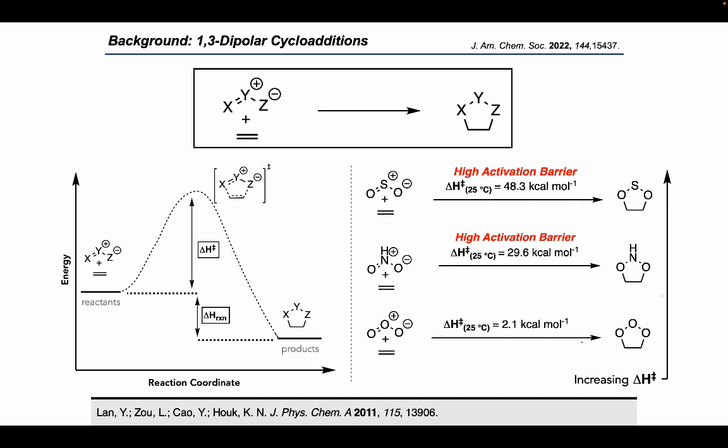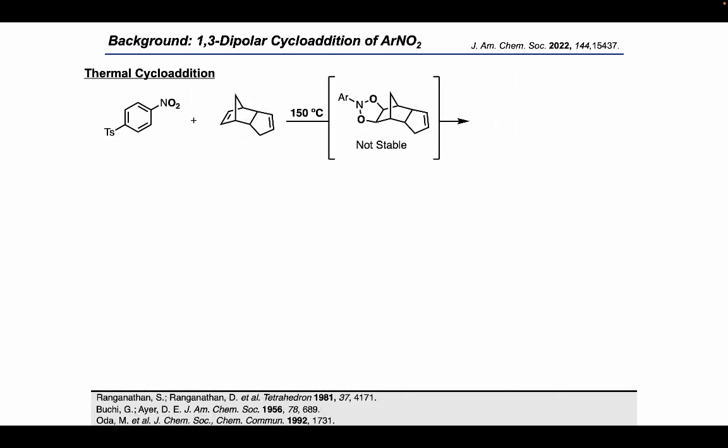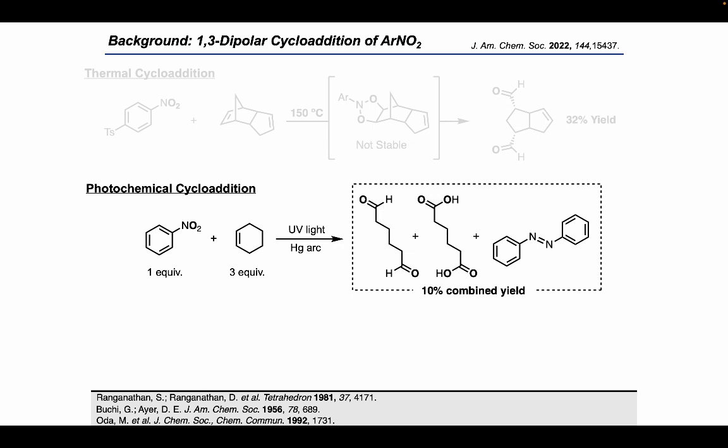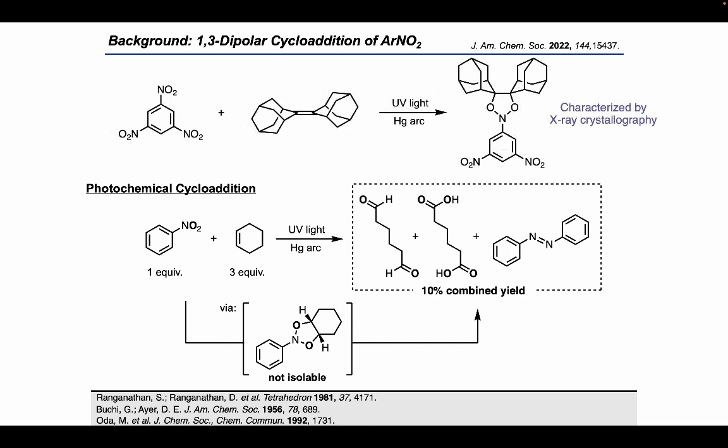How have people been able to overcome this barrier in the past? The 1,3-dipolar cycloaddition of nitro compounds can be thermally promoted with extremely high temperatures, and the dioxazolidine is not stable, which then proceeds to the cleavage product. Buki and I reported in the 1950s that the cycloaddition can be promoted with UV light to get a 10% combined yield of the cleavage products, as well as an azobenzene byproduct. And just as in the thermal condition, the dioxazolidine was not stable or isolatable. However, Oda, in the 1990s, was able to use this strained adamantyl alkene to isolate the cycloaddition adduct and characterize it by X-ray crystallography. However, these photochemical methods used harsh UV light with broadband emission and was not synthetically useful due to the low efficiency.